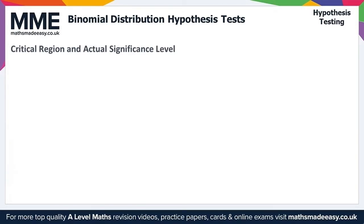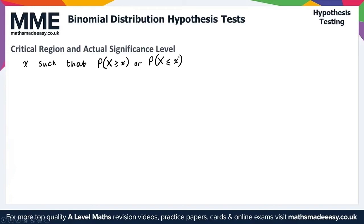Moving on to the critical region and actual significance level. The critical region is the region for which you reject the null hypothesis. For a binomial distribution, this is all values of little x such that either P(X ≥ x) or P(X ≤ x) is less than alpha, the significance level. Which of these two you use depends on what you are testing in the context of the question.